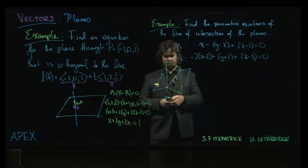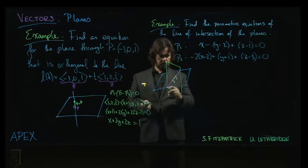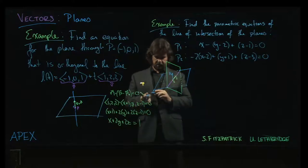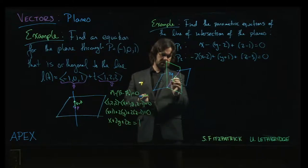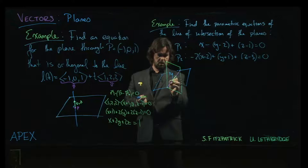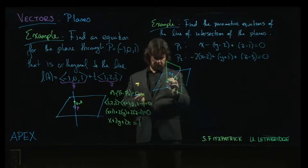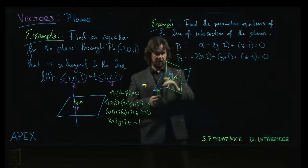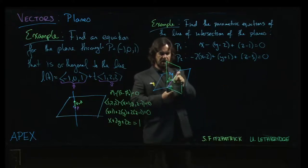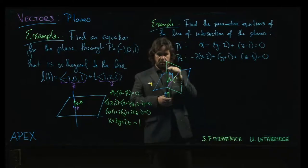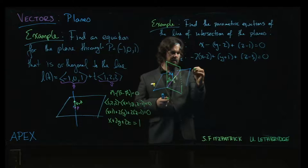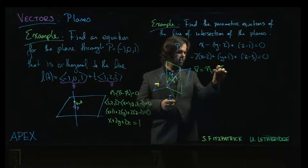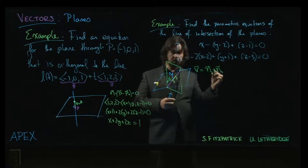And the way we're going to get this is by realizing that these two planes, there's going to be a normal vector here for the first plane, and there's going to be a normal vector here for the second. And that line, because it's the line of intersection of the two planes, that line is in both planes, it's parallel to both planes. So the direction vector for the line has to be orthogonal to both of the normal vectors.